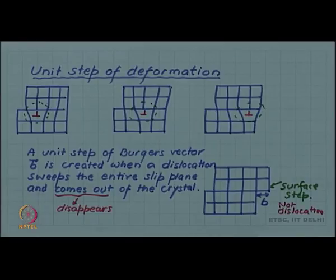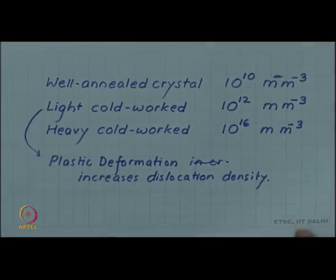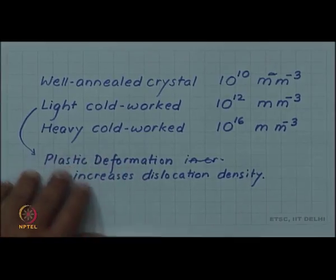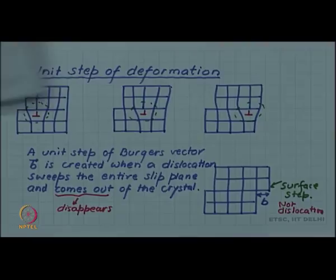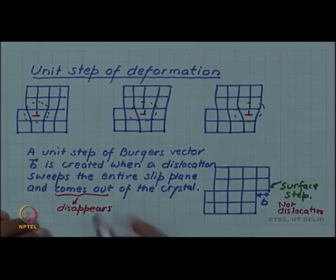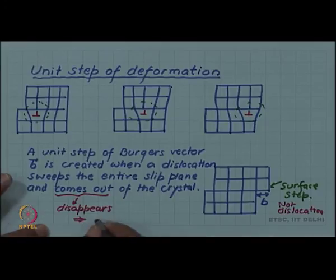This indicates that as plastic deformation progresses and more deformation happens, more such steps are created, so the dislocation density should come down. But we have already seen that actually in plastic deformation the dislocation density is increasing. These two views seem to be in contradiction: for plastic deformation the dislocation has to come out, so the dislocation density should come down, but experimentally we see that the dislocation density is increasing.